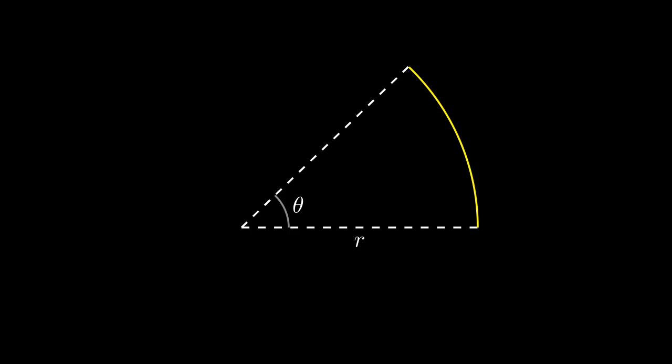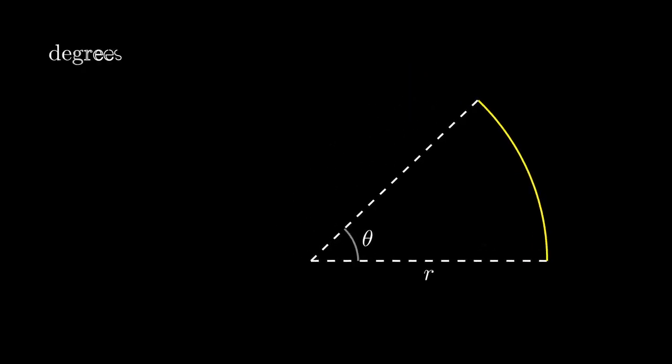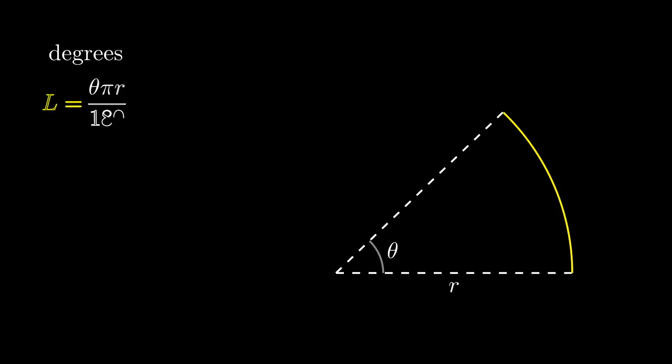But before the video ends, I want to talk briefly about some of the applications of radians and why they're preferable in most cases to degrees. For instance, take a look at this yellow arc we have. If we were measuring θ in degrees, this would be the formula for the length of that yellow line. But now that we are measuring θ in radians, the formula is very simple: just θ times r.